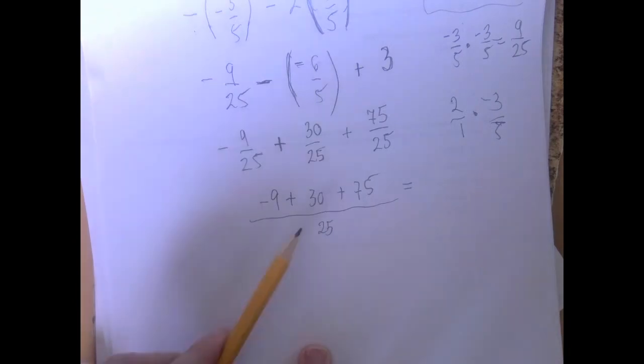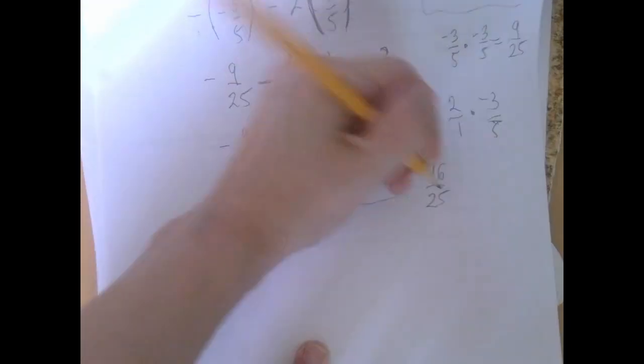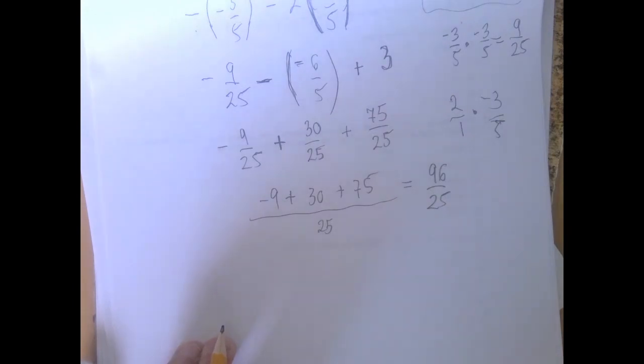It doesn't matter what order we add. So 30 plus 75 is 105. Subtract 9 is 96. We think this is the answer.